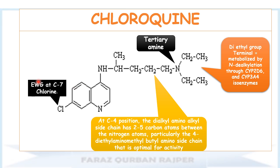We also have the electron withdrawing group chlorine at the 7th position, which is essential for the anti-malarial activity of chloroquine. If we remove any of these groups in chloroquine, the activity of chloroquine will be affected.